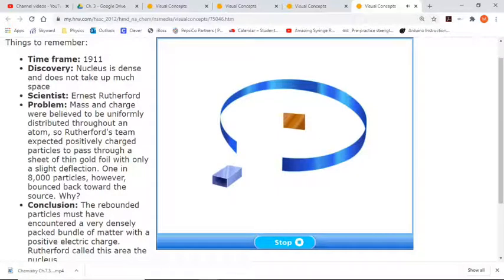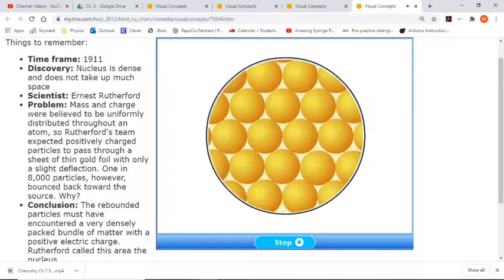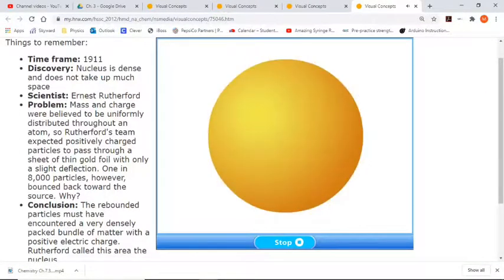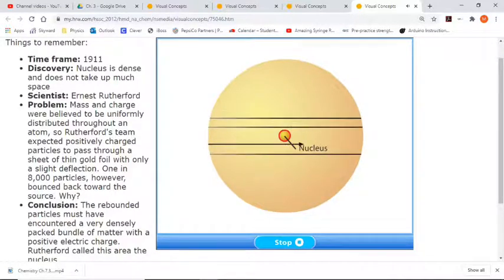Ernest Rutherford, with Hans Geiger and Ernest Marsden, discovered the nucleus of the atom using a beam of positively charged alpha particles. They bombarded a sheet of gold foil with a stream of alpha particles. Most of the particles passed straight through the foil. About one in 8,000 particles, however, were deflected, sometimes directly back at the source. Rutherford explained these results by hypothesizing that nearly all of the mass of an atom is concentrated in a very small volume called the nucleus. If the nucleus were small, it would be easy to miss. Alpha particles which miss the nucleus are deflected only slightly, if at all. Alpha particles which hit the nucleus are deflected severely.